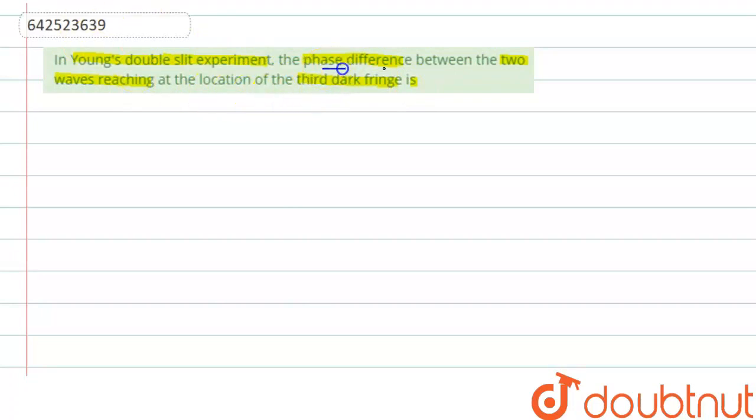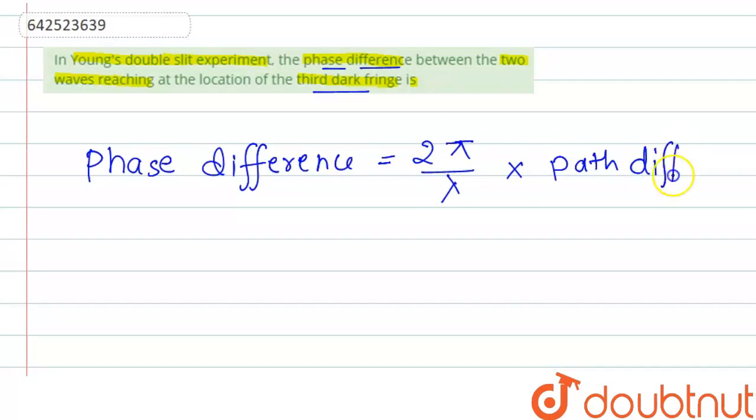The phase difference at the location of third dark fringe. So, the phase difference is defined by 2π/λ into path difference.